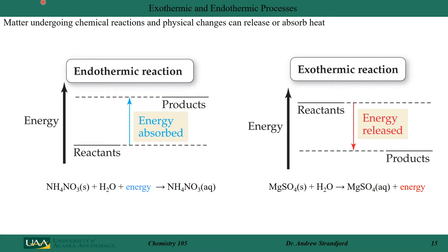From an energy diagram standpoint: in a chemical reaction with reactants and products, if energy on the y-axis goes from low to high, the system has absorbed energy — that's endothermic, like the cold pack. In an exothermic reaction, reactants are at high energy and products at low energy; energy is released going from reactants to products, like the hot pack. These diagrams represent reactions that are either endothermic or exothermic.